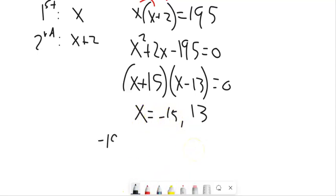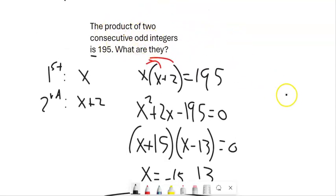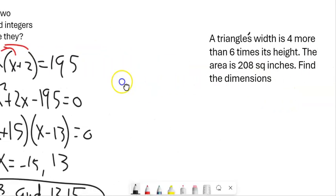This is two different answer sets. So notice x can be negative 15. So if x is negative 15, and I plug that in for here, that plus 2 is negative 13. So one pair that works is negative 15 and negative 13. And if x is 13, and when x is 13, 2 more than that is 15. So both of these sets, both of these pairs I should say, work as a solution to that situation. All right, let's take a peek at another one.